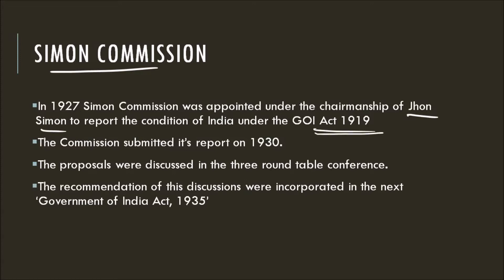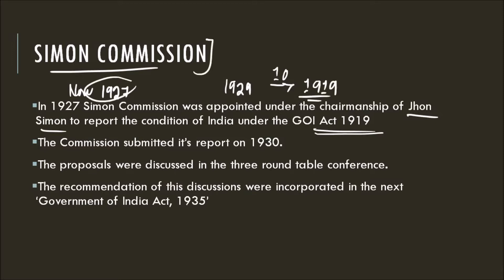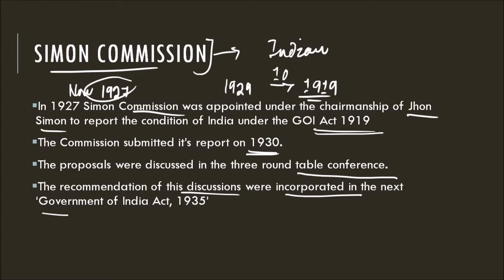The Commission was appointed in November 1927. It was supposed to come in the year 1929, that is after 10 years of implementation of the Government of India Act 1919, but it came a bit earlier. The Simon Commission was boycotted by all major parties as there was not a single Indian member in the Commission. The Commission submitted its report in 1930, and to consider the proposals, the British government organized three roundtable conferences. The recommendations from these discussions were incorporated into the next Government of India Act 1935.